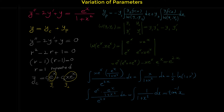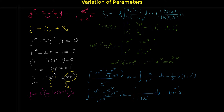Now that we have the integrals, we can write the particular solution. y_p equals negative y₁ times the first integral, so negative e^x times ½ ln(1+x²), plus y₂ times the second integral, so xe^x times arctan(x). This is the particular solution.